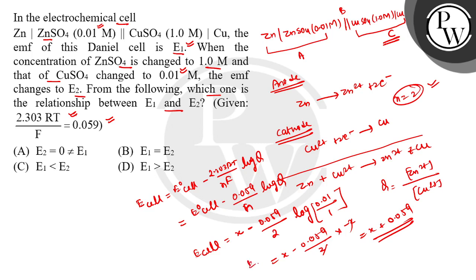Now calculate E2. The concentrations are reversed. E2 equals E° minus 0.059 upon 2 log of 1 upon 0.01, which is log 10^2. The 2 comes forward. E2 equals E° minus 0.059.